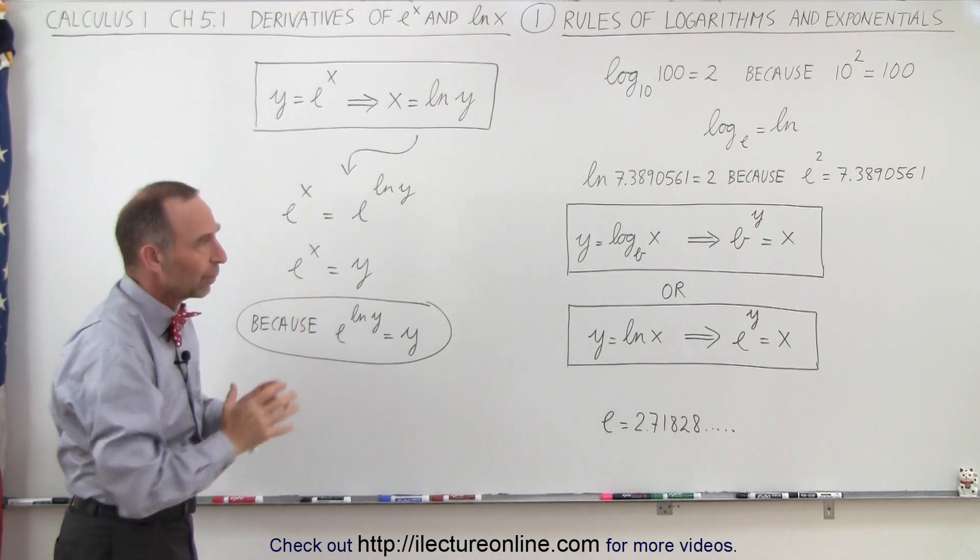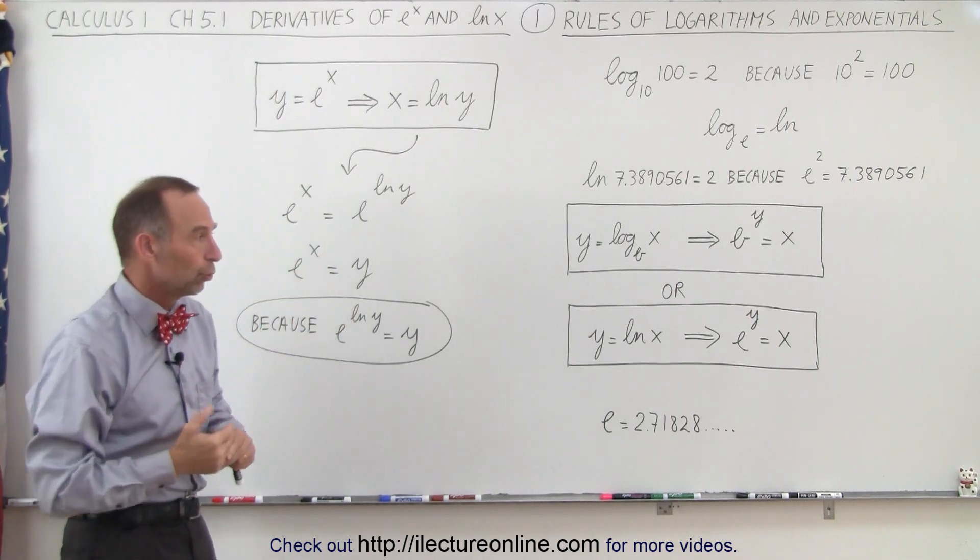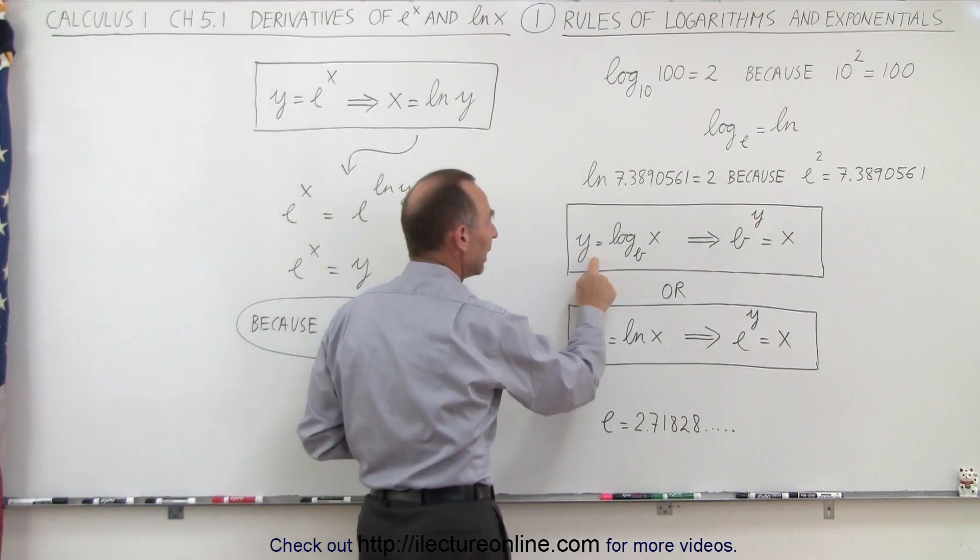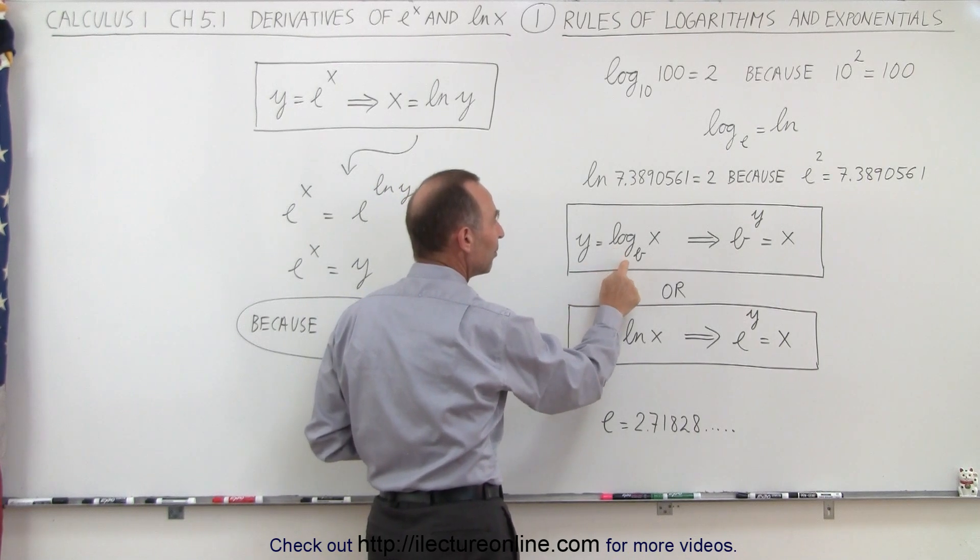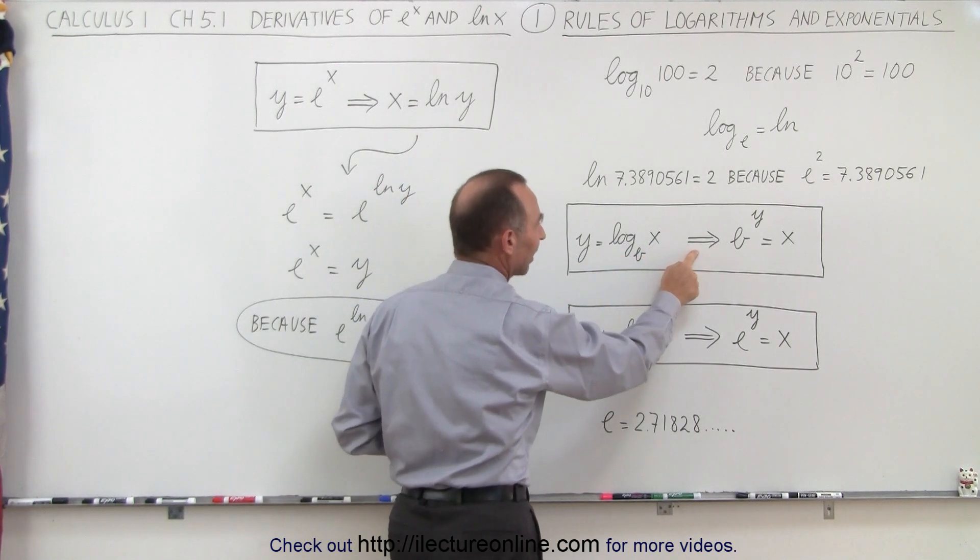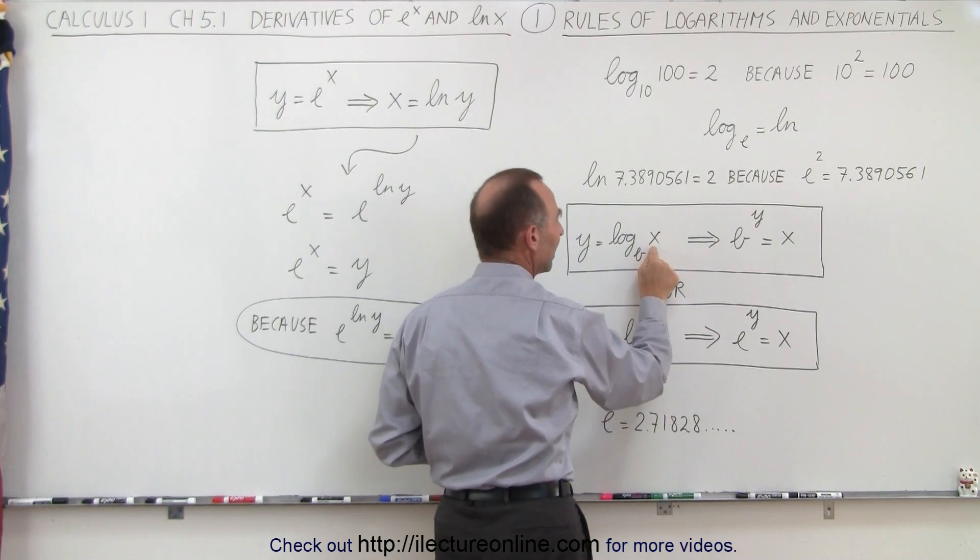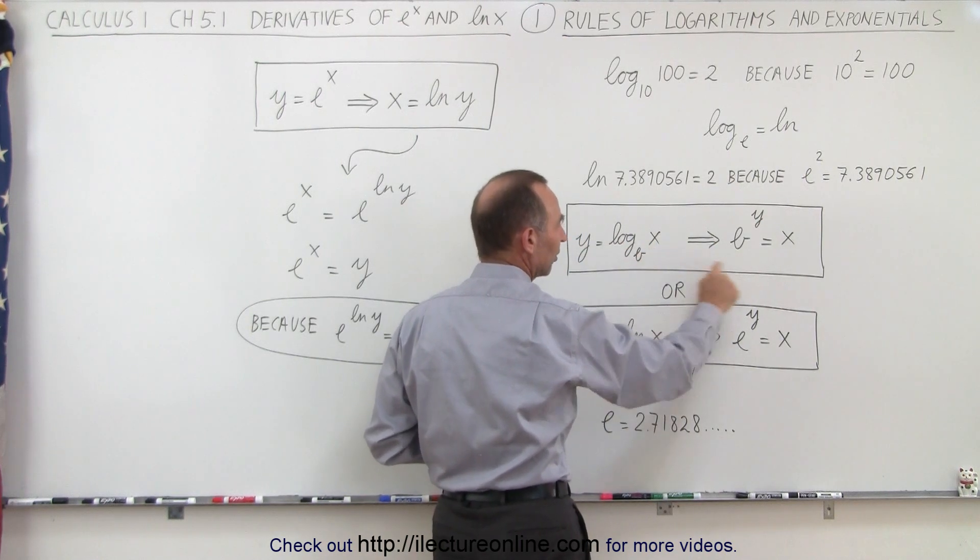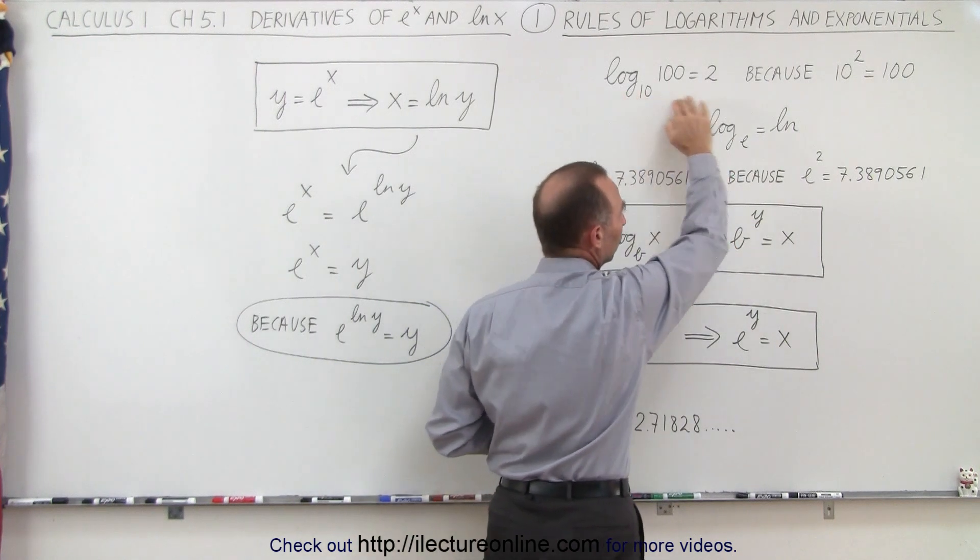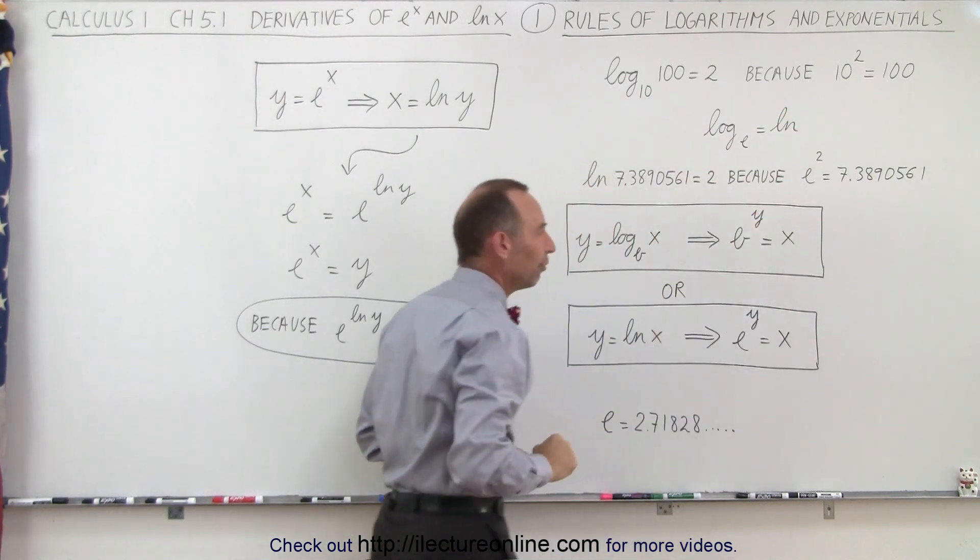Because of that relationship, we can make some rules. We can say that y equals the log base b of x. That means that the base raised to the exponent y is equal to x, so we get that number back. This is basically the same thing as what we wrote there, but in a more general form.